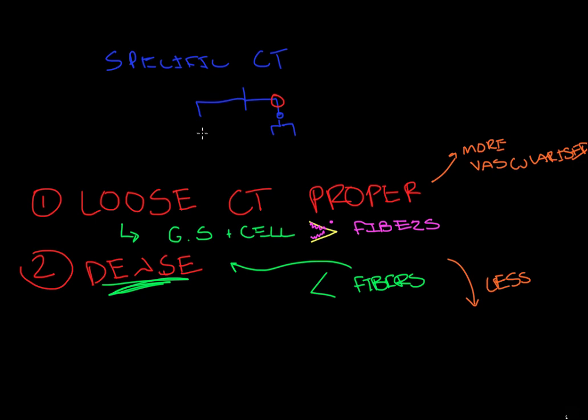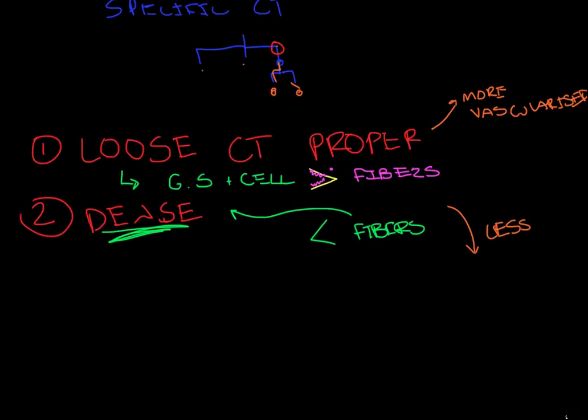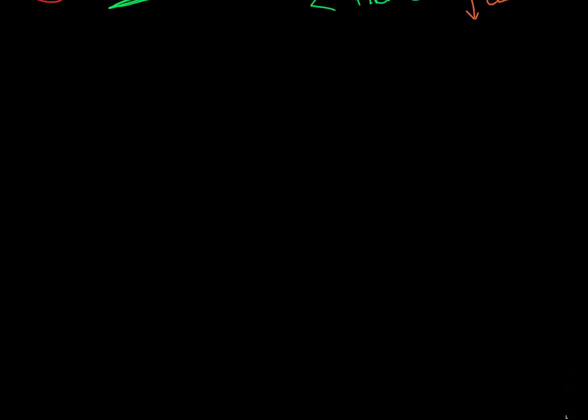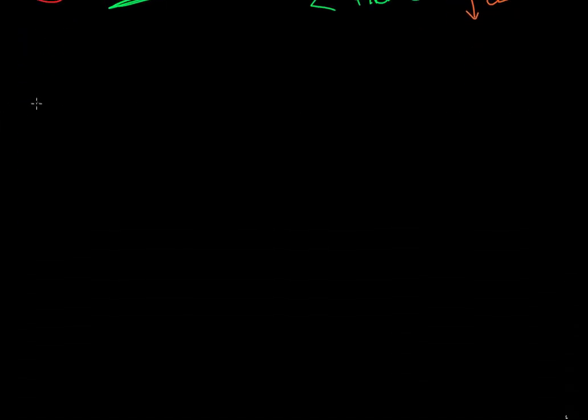Hopefully you guys got that. So fluid, supporting, CT proper. From CT proper we have loose and we have dense. And from those, we have specifics. So I'm going to go into loose first. So we're under loose. So the first type of loose is called areolar. Areolar CT. So this is a specific type of CT. I didn't go over cells.